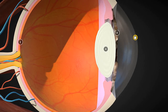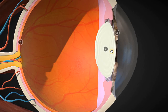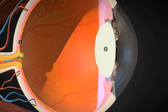So: cornea, aqueous humor area. There's the opening, which is the pupil, to allow light to come in to the lens. Then the light would bend and hit the back of the eye, which is the retina area. All this back here is the retina.